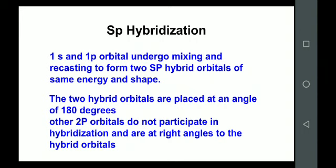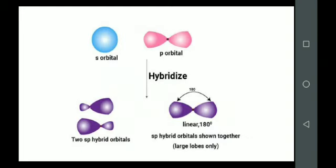The other two p orbitals will not participate in hybridization and will remain at right angles to the hybrid orbitals — one above and one below the plane. In this way, they remain at right angles to the hybrid orbitals.